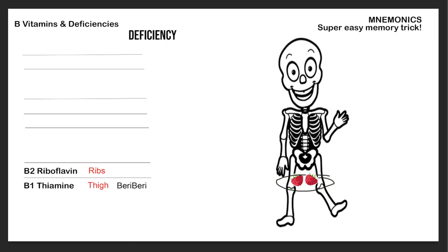B2 is riboflavin — I remember it as ribs. So you go from B1 at the thigh up to B2 at the ribs. There's not really a common deficiency, but if needed you could draw a little face inside the ribs, like lesions in the mouth, skin, and eyelids — referencing the movie 'Scrooged' where faces appear inside rib cages.